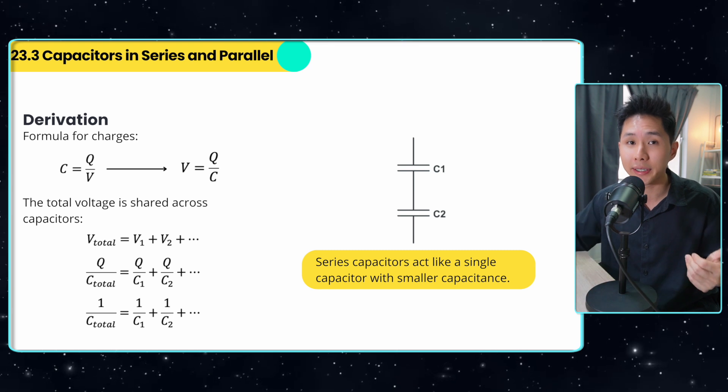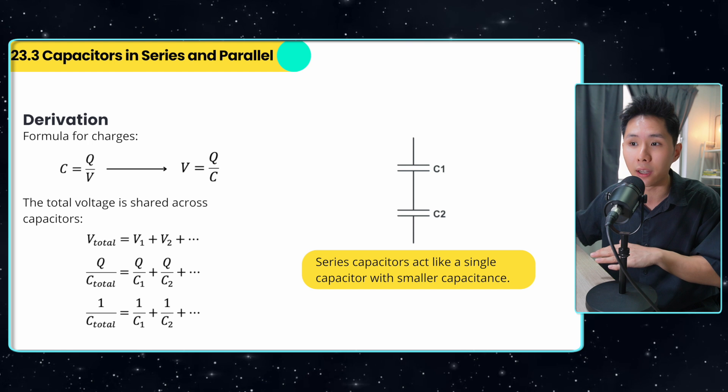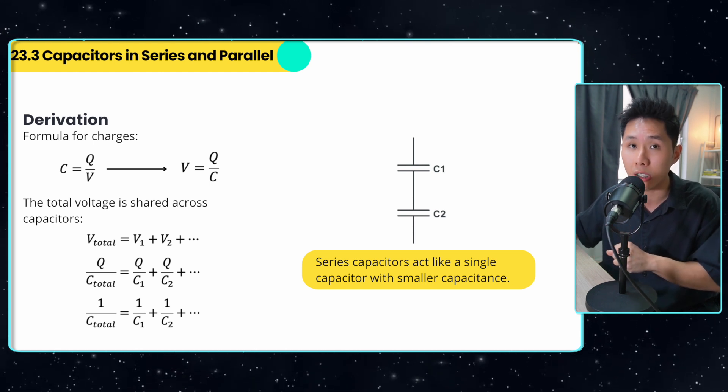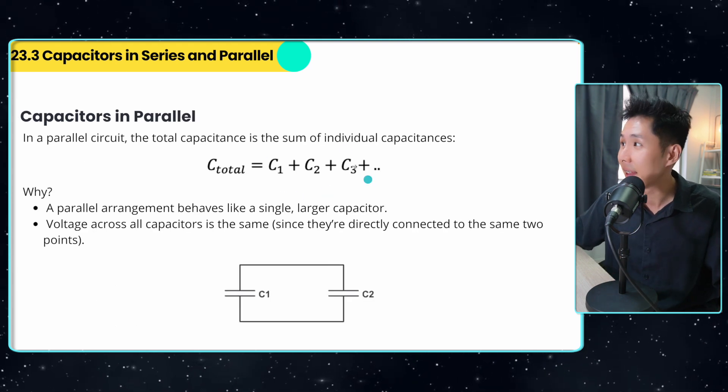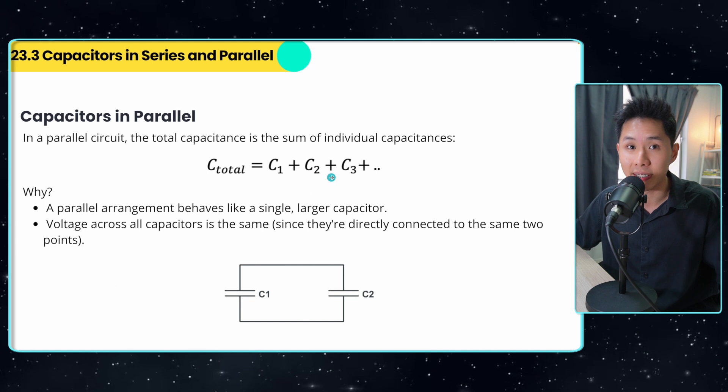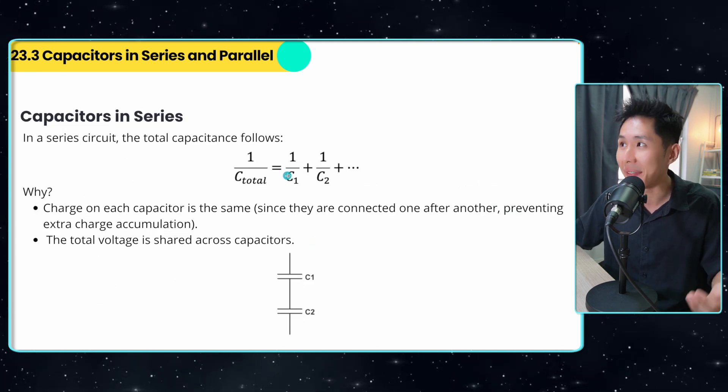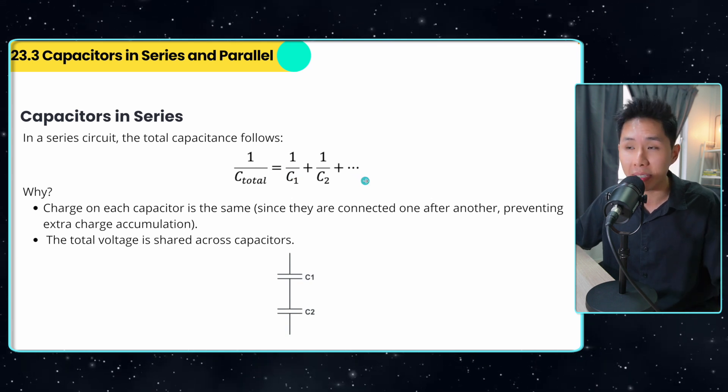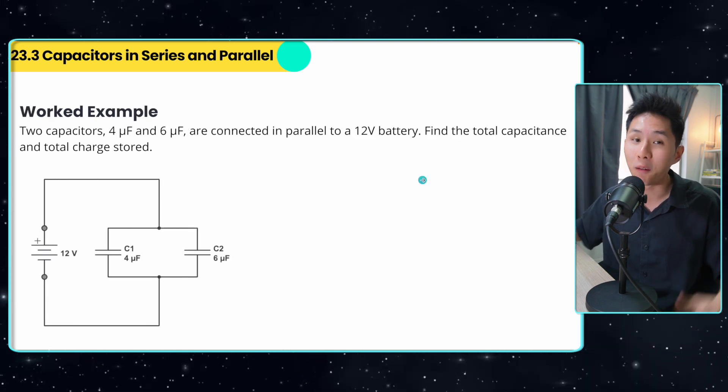Having derived the formula for capacitors arranged in series and parallel, you will see that it's exactly the opposite of how we calculate resistance when resistors are arranged in either parallel or series. So when calculating combined resistance, this is actually the formula for series resistance, whereas the formula becomes like that when it's arranged in parallel. So to help you remember better, just remember, it is always the opposite of how you calculate resistance in a circuit.